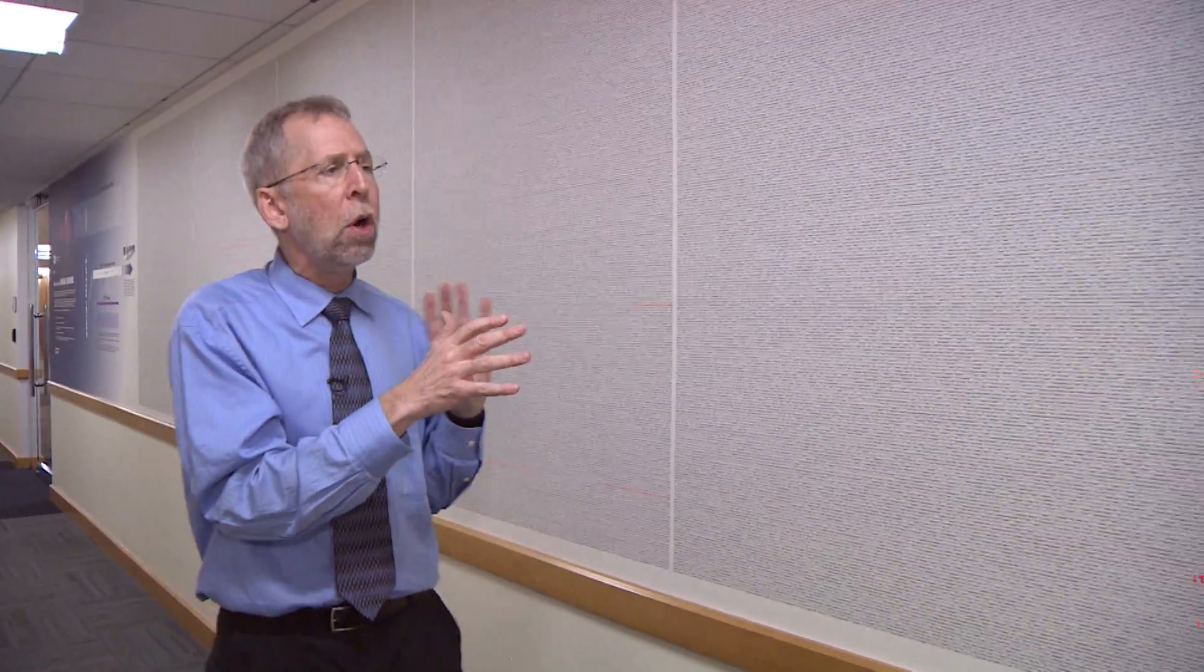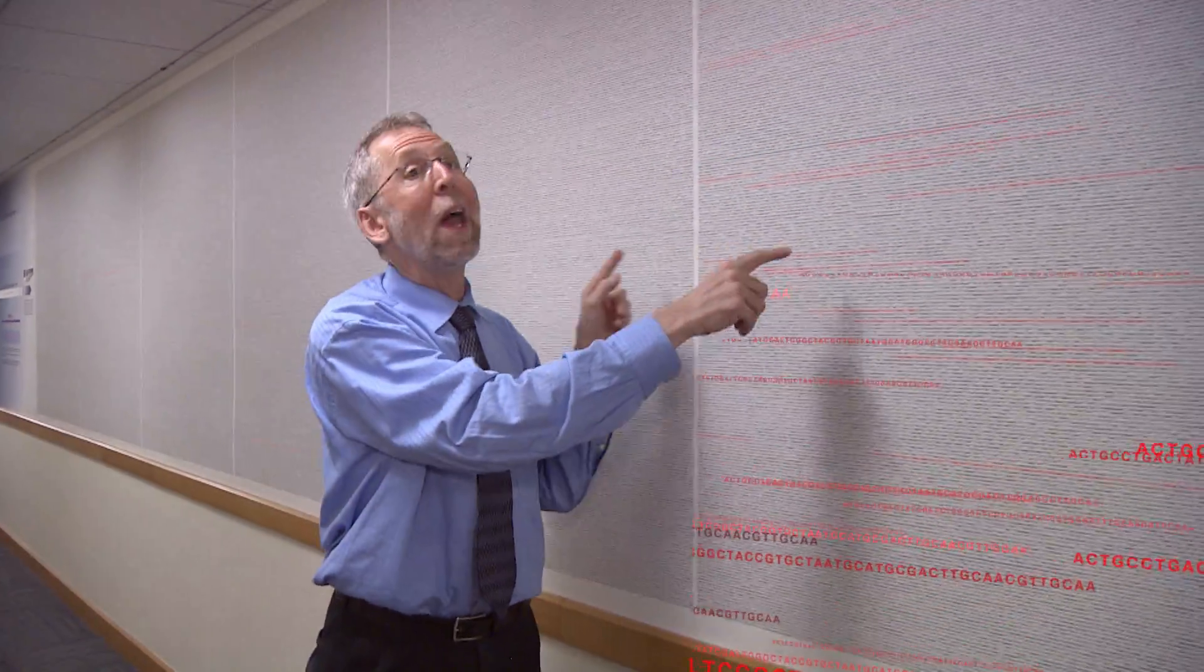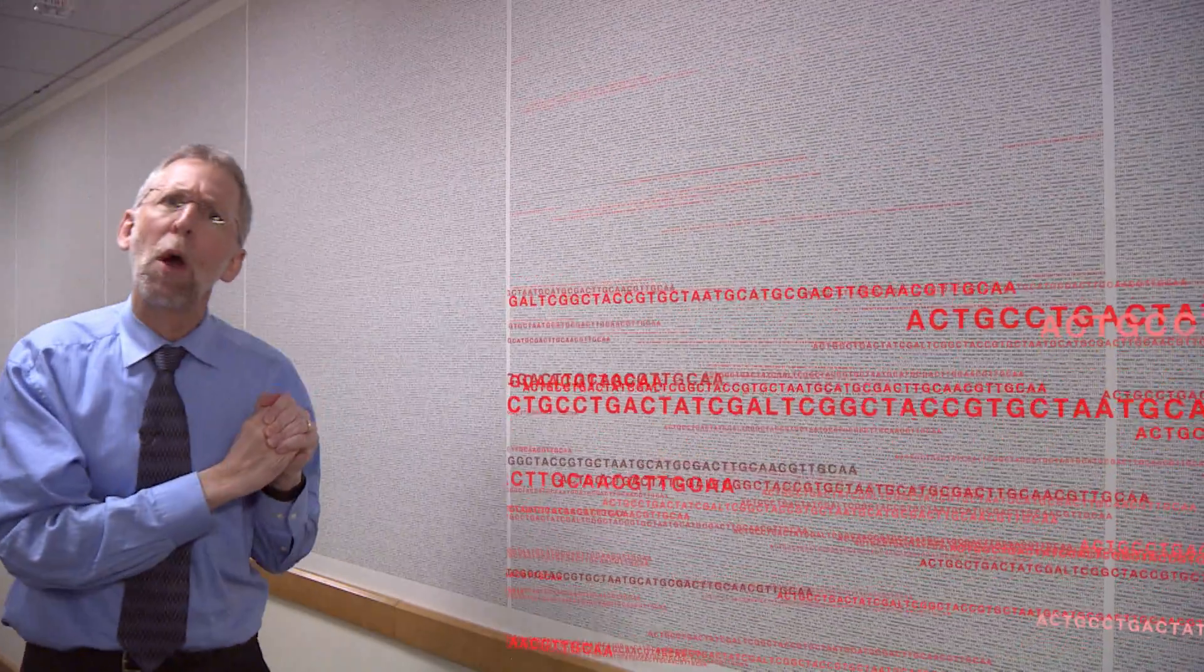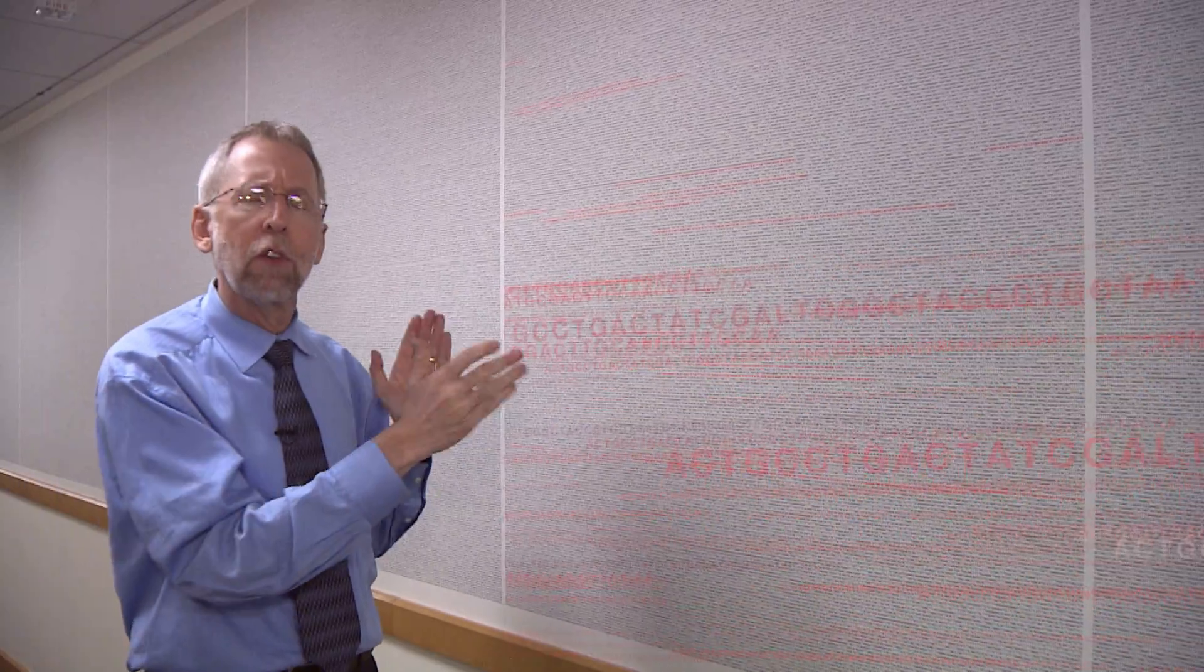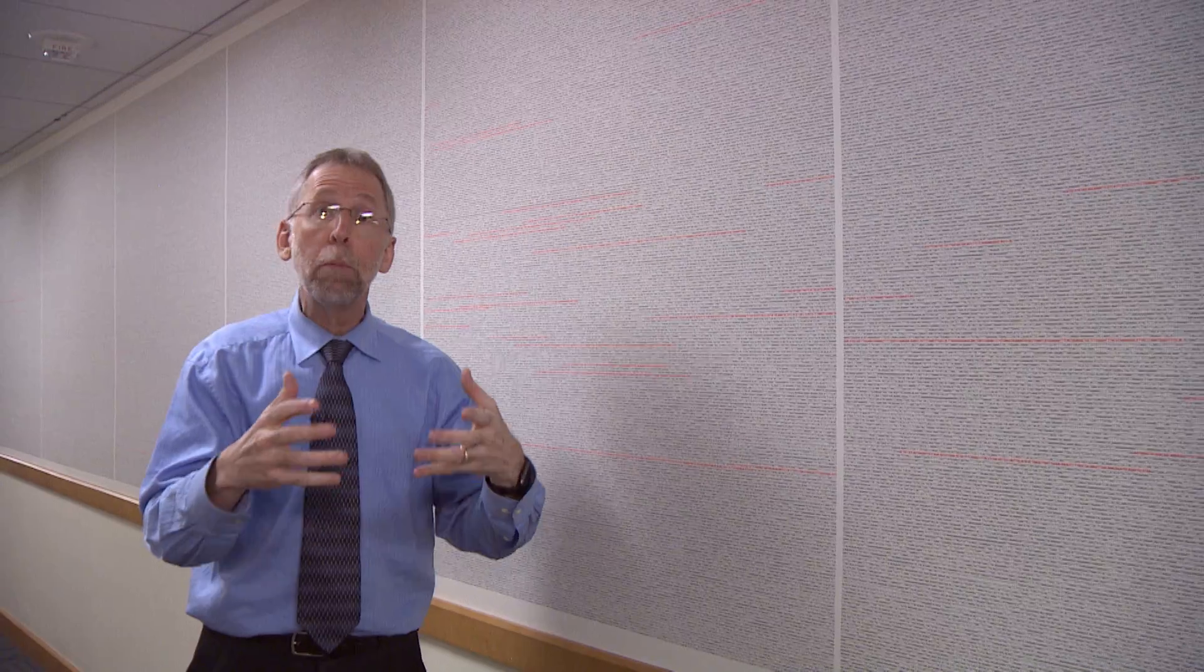Every once in a while, though, you'll see a short string of letters in another color. That's in red. What do those mean? Well, it turns out that about one and a half percent of the letters of the human genome actually directly encode for proteins.